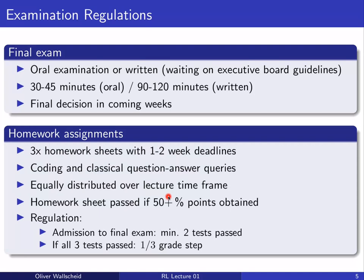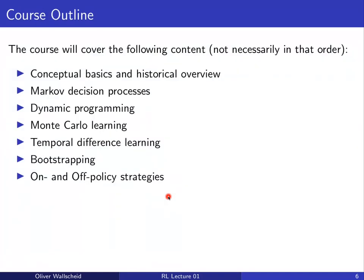Homework assignments are distributed equally over the lecture time. A homework sheet is passed if you obtain 50% or more of the points. You will be admitted to the final exam if you pass at minimum two out of three tests. If you pass all three, you receive a one-third grade step bonus on your final examination mark.